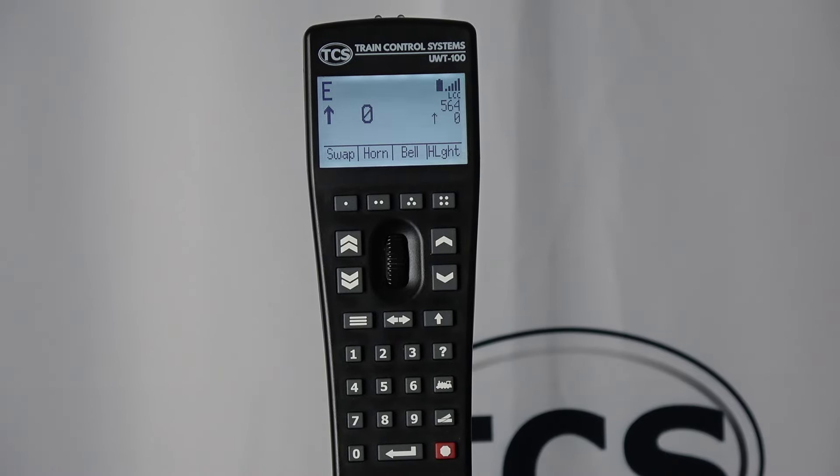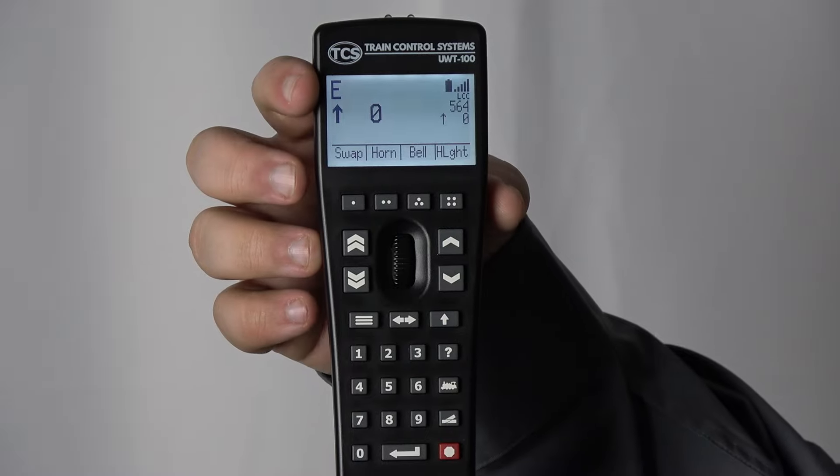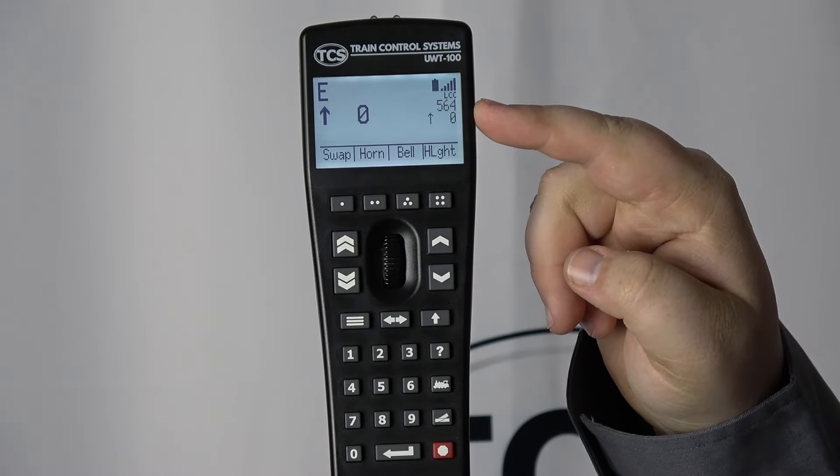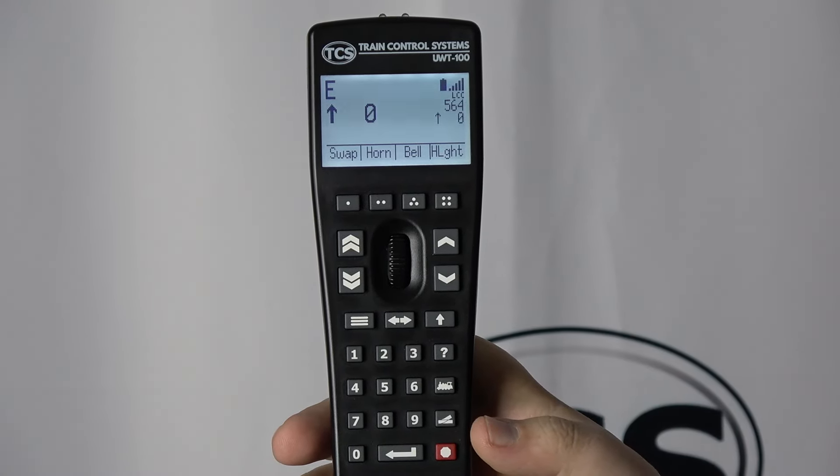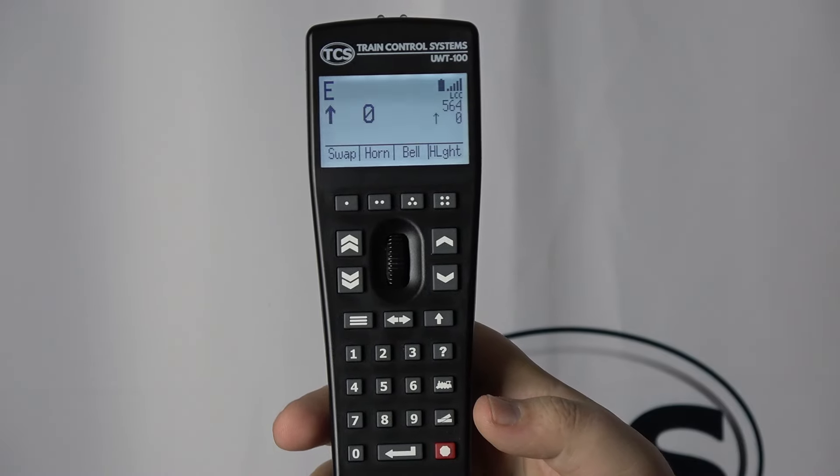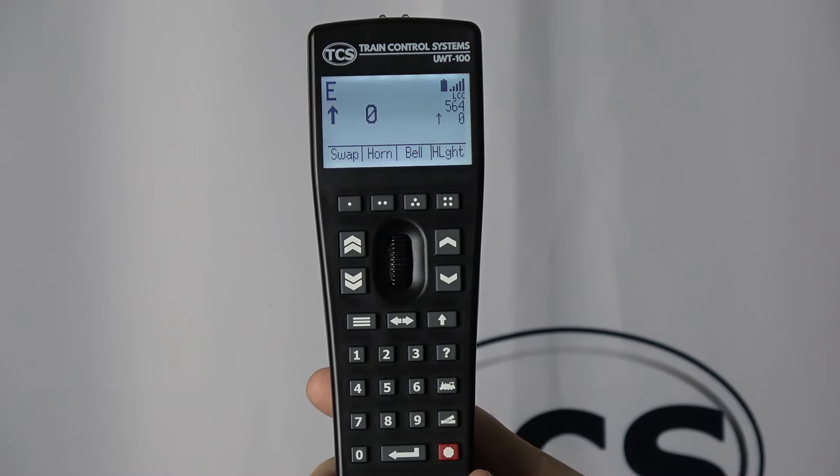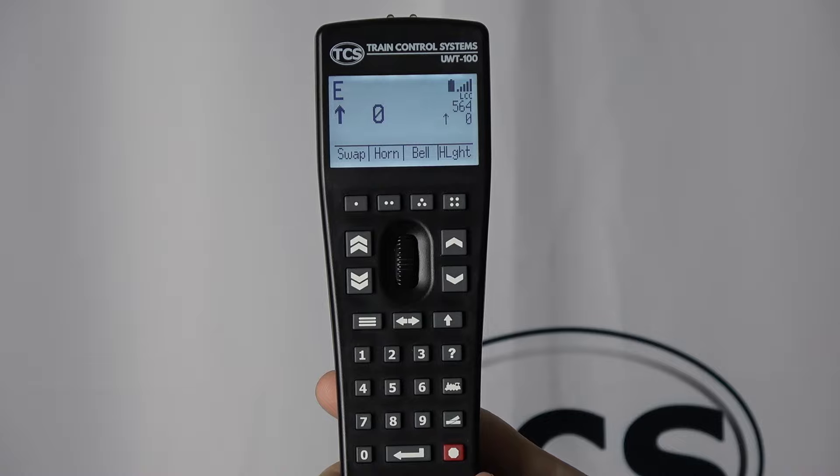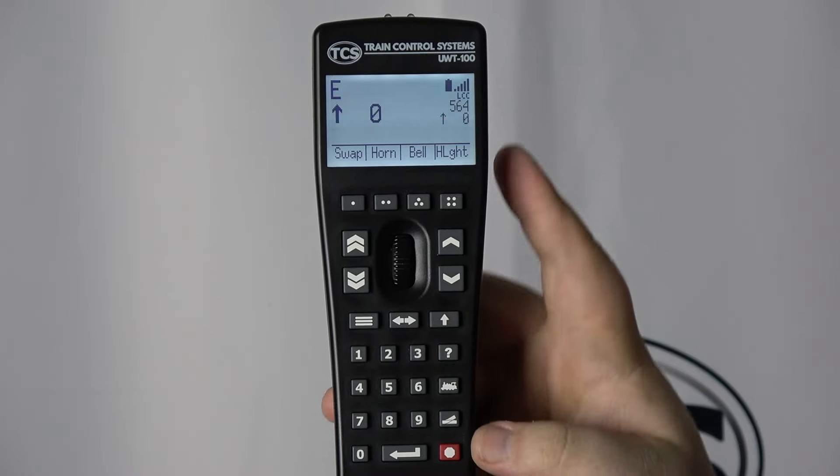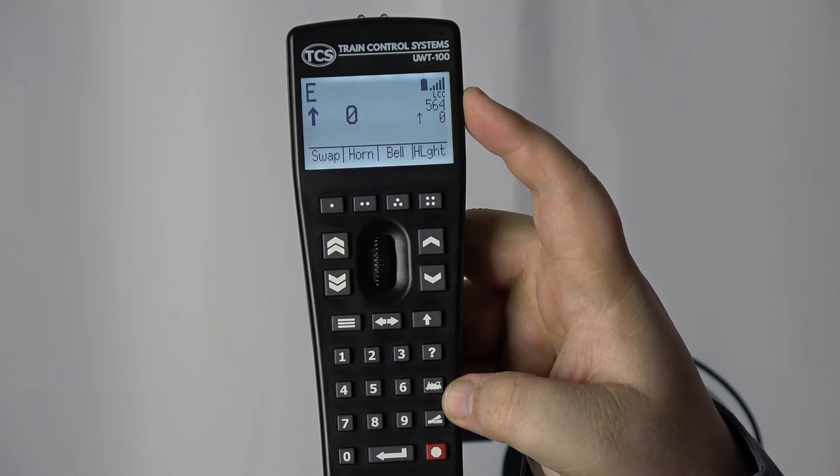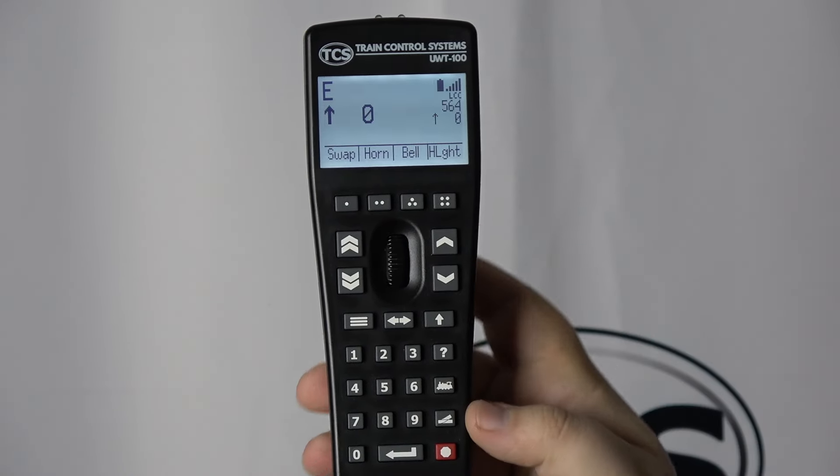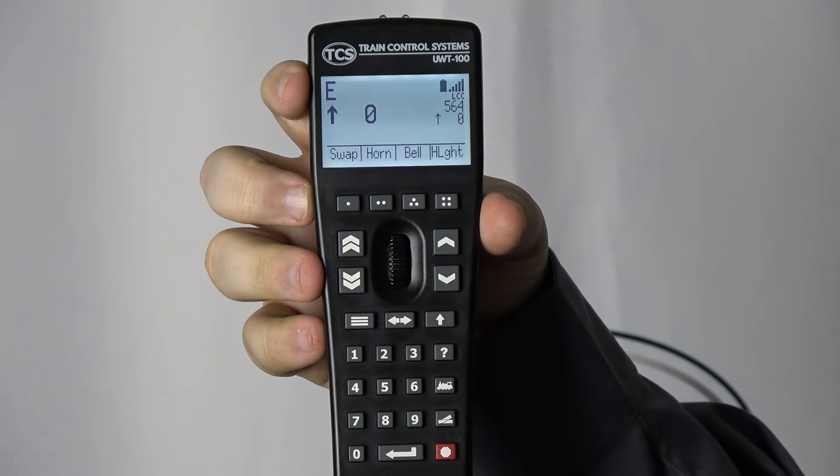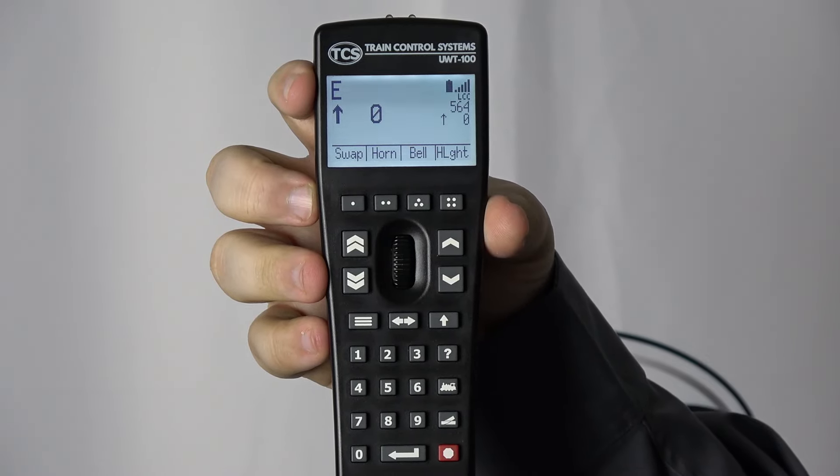There are two slots for trains on the throttle, the primary slot and the secondary slot. These slots allow you to control two trains simultaneously. If you had a train selected when entering the menu, that train will be put into the secondary slot automatically when dual throttle mode is turned on. In this case, it is 564. You will see E appear on the left side of the screen indicating that the primary slot is empty.